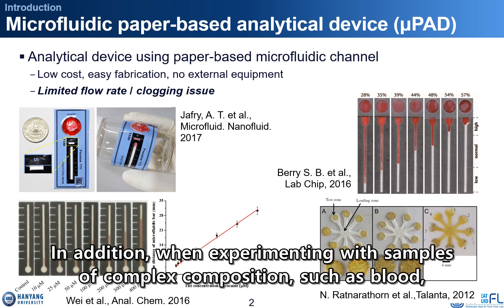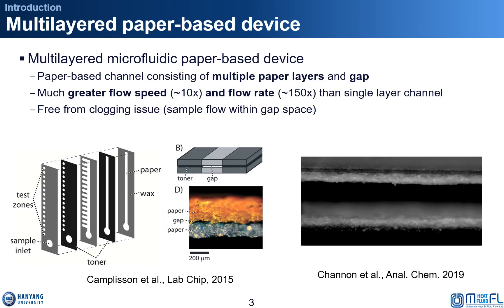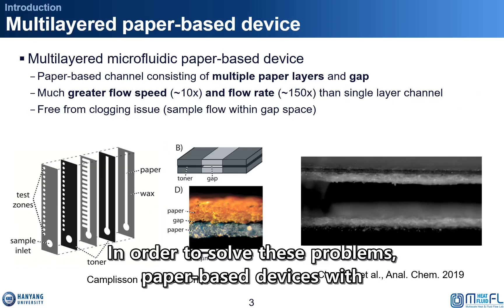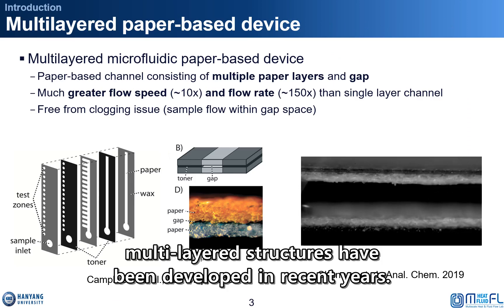In addition, when experimenting with samples of complex composition, such as blood, the components in the sample can block the flow and change the flow characteristics. In order to solve these problems, paper-based devices with multi-layered structure have been developed in recent years.